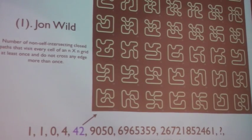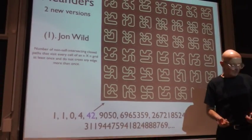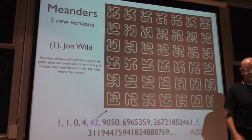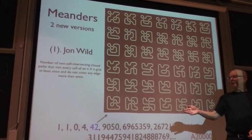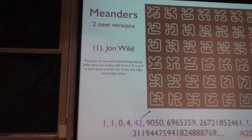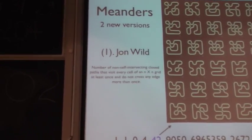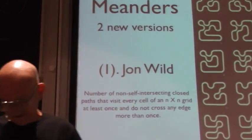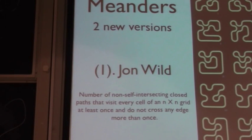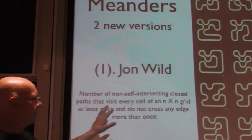Then yes meanders. When we got around to 200,000 sequences, we're now up to 221,000, but when we got up to 200,000 sequences we decided to award sequence number A200,000 to the nicest sequence that came in around that time. And so Jonathan Wilde who's a professor of music at McGill sent in this sequence. This is these are meanders.